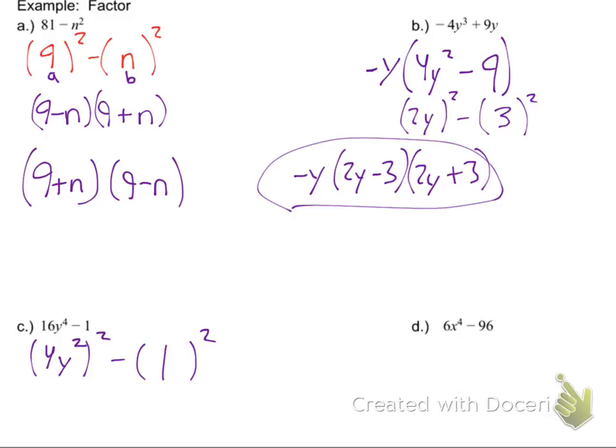4y squared. 4y squared. Because that's power of a product. And that means that 4 would be squared, y squared would be squared, which would be 16y to the 4th. So, guess what? What does this become, guys? 4y squared plus 1. 4y squared minus 1. We're done. Boom. Or are we?